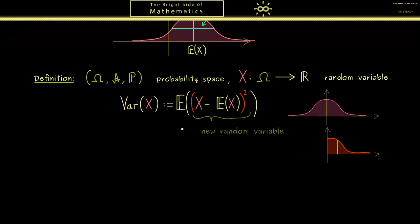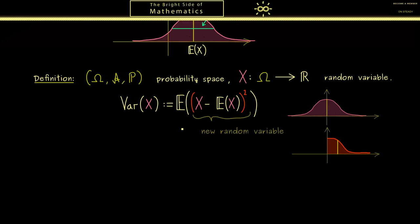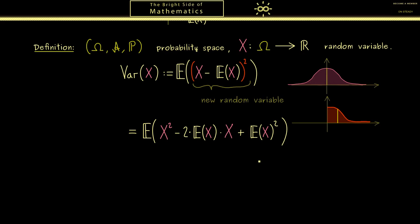It might be helpful to reformulate this definition by expanding the square. This means we first have X squared, then minus 2 times E[X] times X, plus the last term (E[X])². Note that E[X] is just a constant, which helps us use the properties of the expectation we learned in the last video. In particular, linearity can make this expression much simpler — we can pull out the minus sign and the plus sign.